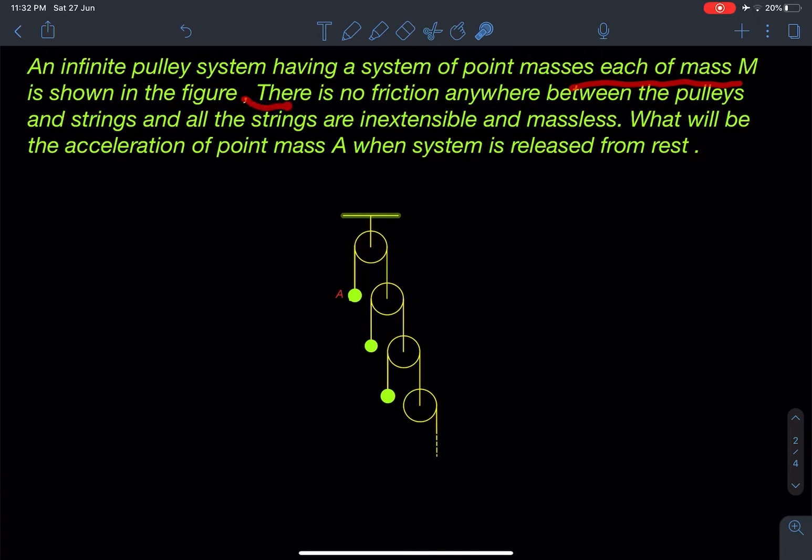There is no friction anywhere between the pulleys and strings, and all the strings are inextensible and massless. What will be the acceleration of point mass A when the system is released from rest?